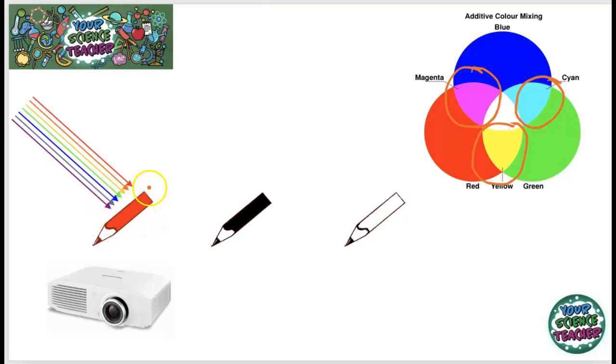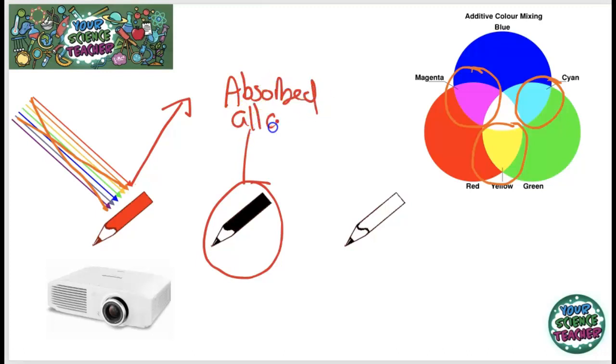Now, this red pencil will absorb every other single colour apart from that red going into it. So, only the red will be reflected into your eyes. Now, if you look at an object and it is black, that means that it has absorbed all of the colours in the spectrum. And if it is white, then it is reflecting all of the colours in the spectrum. And this is the principle of how your TVs show all of them bright colours that appear on your screen.